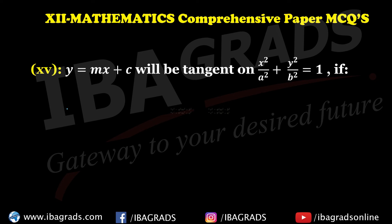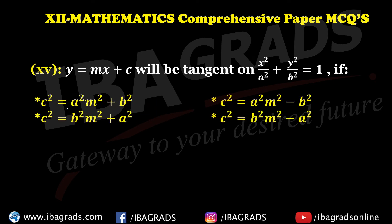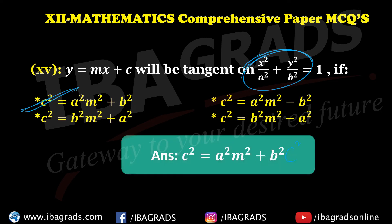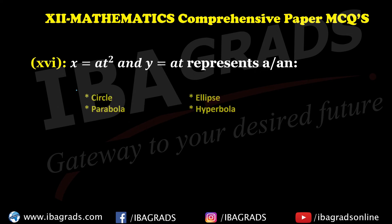y = mx + c is the tangent condition. The key relation is a² + b² = c², where x² represents the x-component and y² represents the y-component. These are the parametric equations of a parabola.